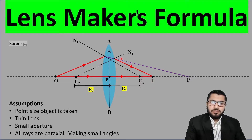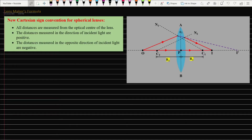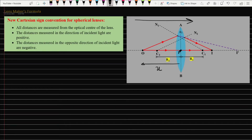Now let's move to the derivation of the lens maker formula. We use the Cartesian sign convention and measure all distances from the pole position P. If the incident light travels from left to right, the object distance u is measured opposite to the direction of the incident ray and is therefore negative.